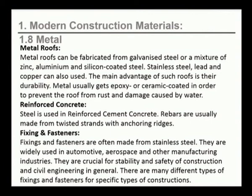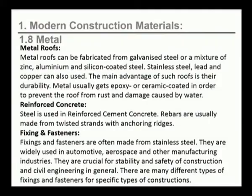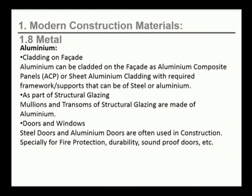Metal roofs can be fabricated from galvanized steel or a mixture of zinc, aluminum and silicon-coated steel. Stainless steel, lead and copper can also be used. The main advantage of such roofs is durability. Metal usually gets epoxy or ceramic coated to prevent rust and water damage. Steel is also used in reinforced cement concrete, where rebars are usually made from twisted strands with anchoring ridges. Fixings and fasteners are often made of stainless steel and are widely used in automotive, aerospace, and manufacturing industries. In the glazing industry, steel fasteners provide the required strength to the glass facade and are crucial for stability and safety in construction and civil engineering.